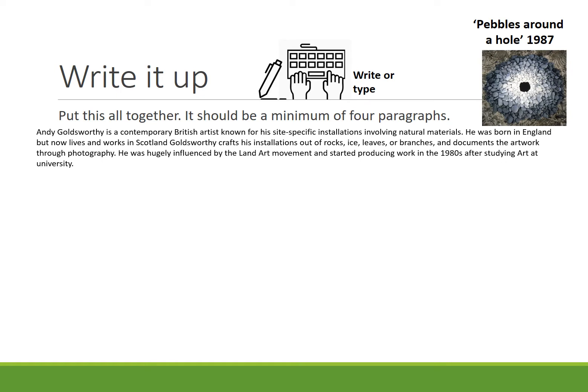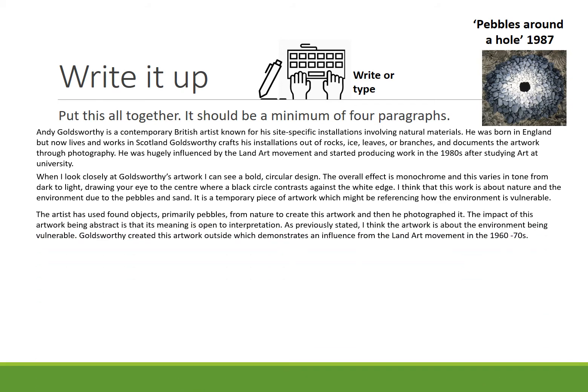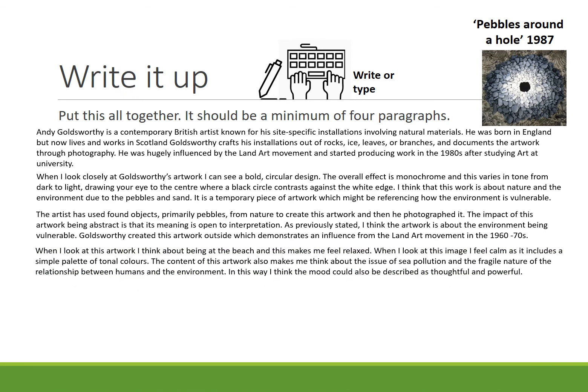The first section is your information about the artist that you've researched. The second section is based on the content and the meaning of the piece of art. The third section is the media that the artist has used, and then finally you talk about the mood and the atmosphere in terms of how you have interpreted the piece of artwork.